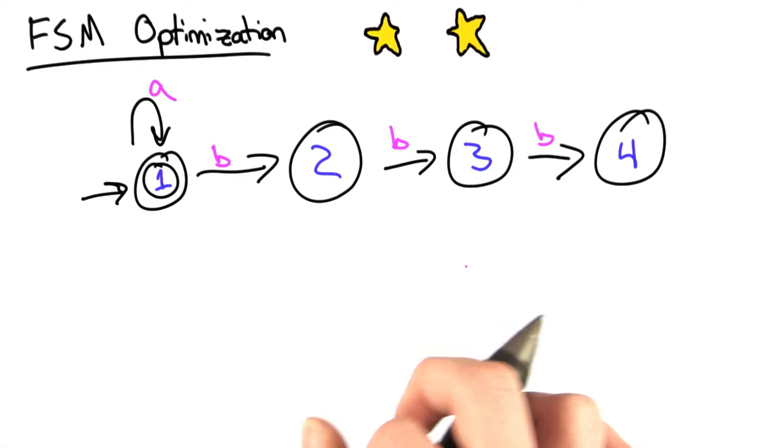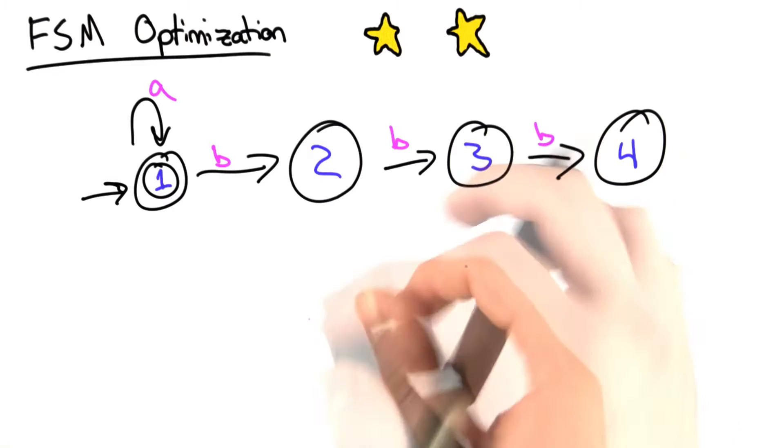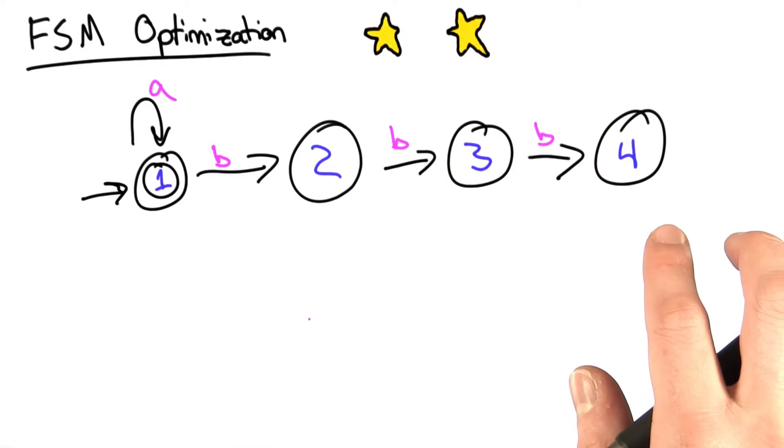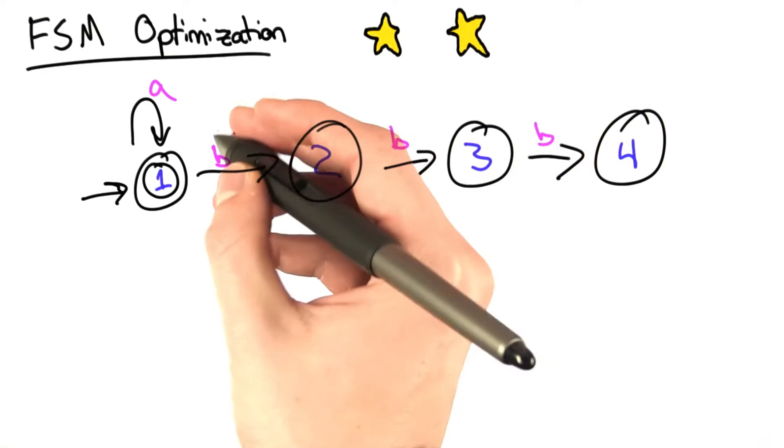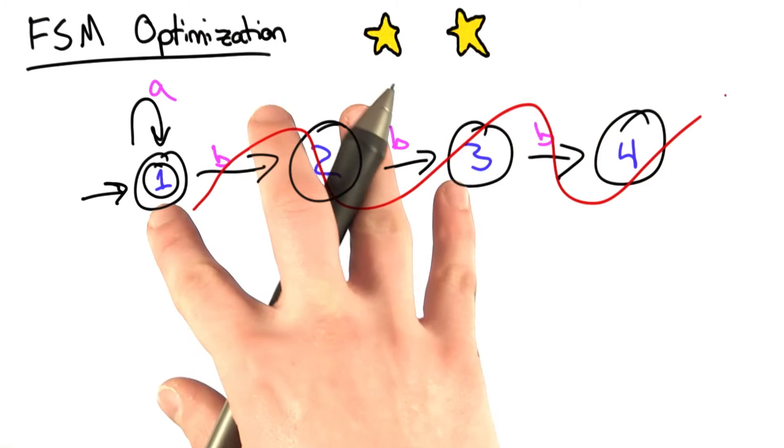you can never get to the accepting state. From state 2, 3, or 4, there's no way to get to state 1. So any string that goes down this path is always going to fail. This state machine is equivalent to the one that doesn't include any of these states. So we can make it a lot simpler.